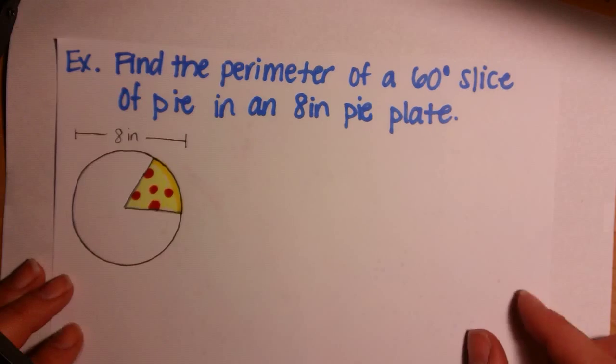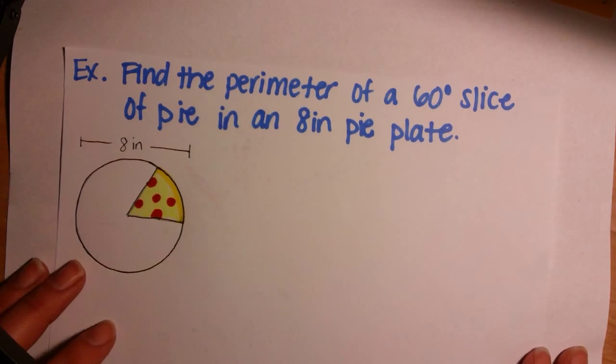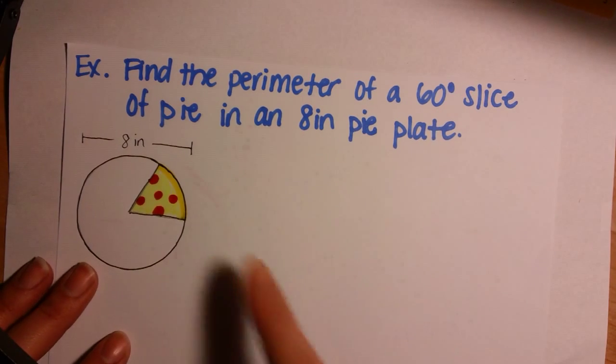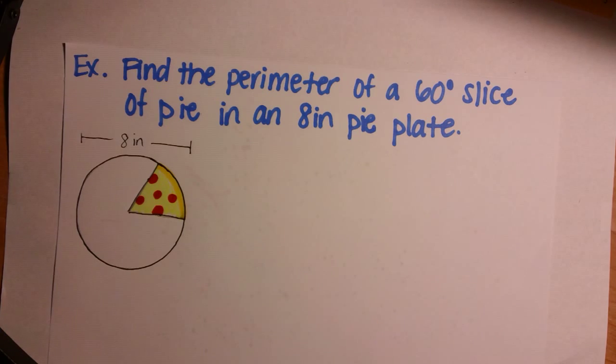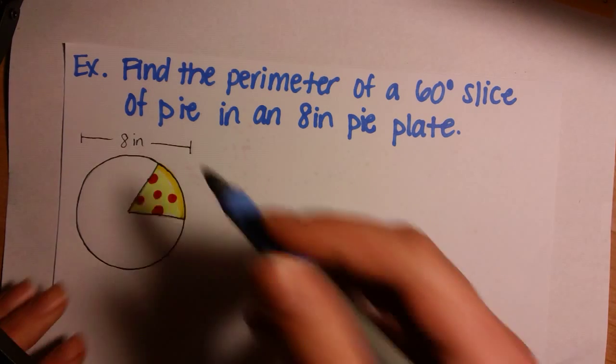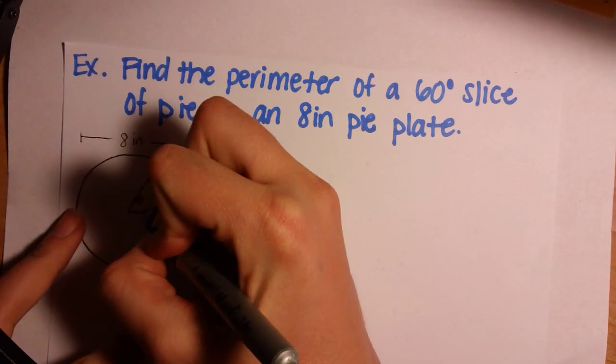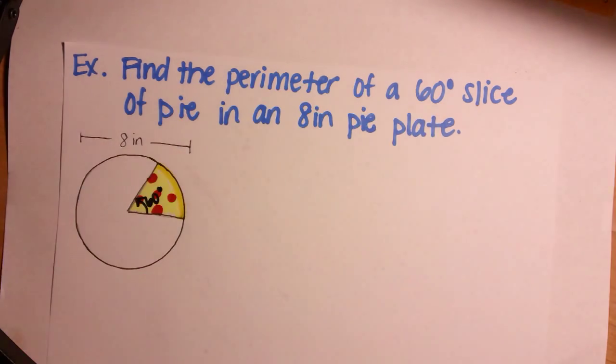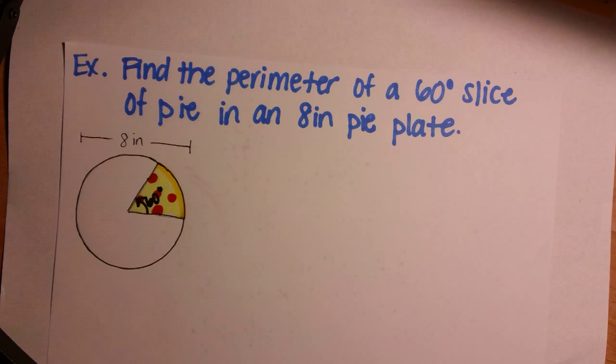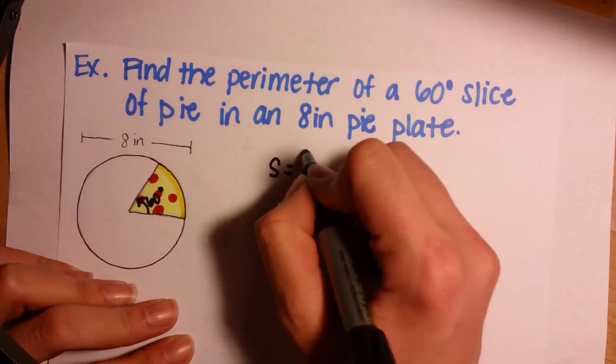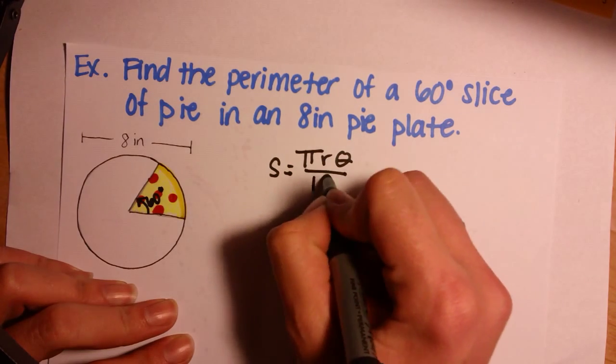In the meantime, let's look at an example. We want to find the perimeter of a 60 degree slice of pie in an 8 inch pie plate. I chose pizza pie. So we have an 8 inch pie plate. And we know that the pie is going to be 60 degrees. So from here, we can calculate our arc length.